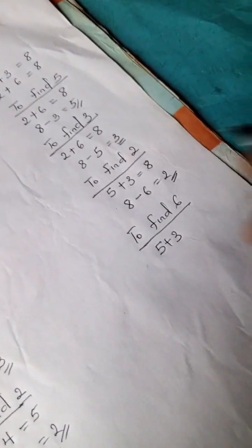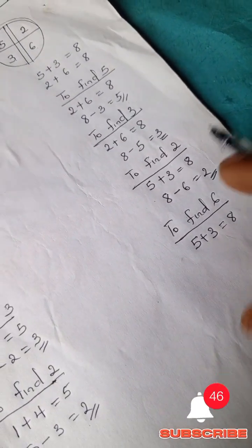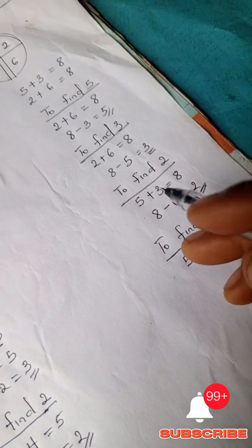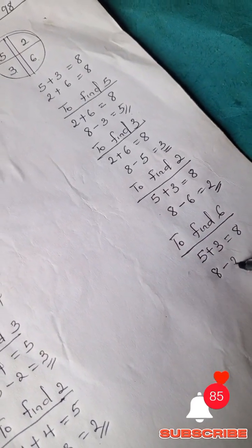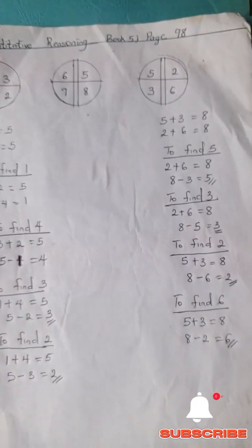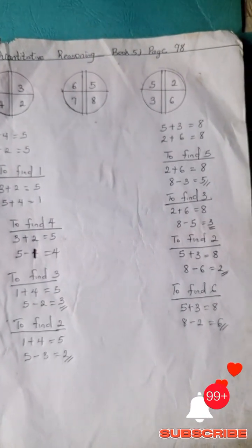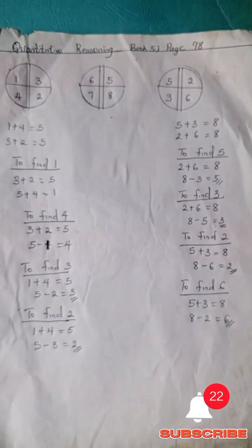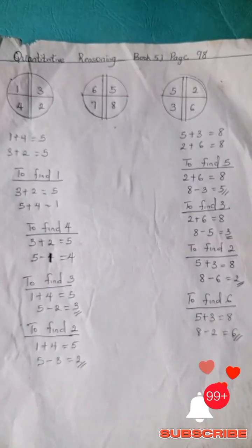5 plus 3 is 8, and 8 minus 2 is 6. Alright, hope you got this. Do well to subscribe to this channel for more quantitative reasoning and mathematics problems. Bye.